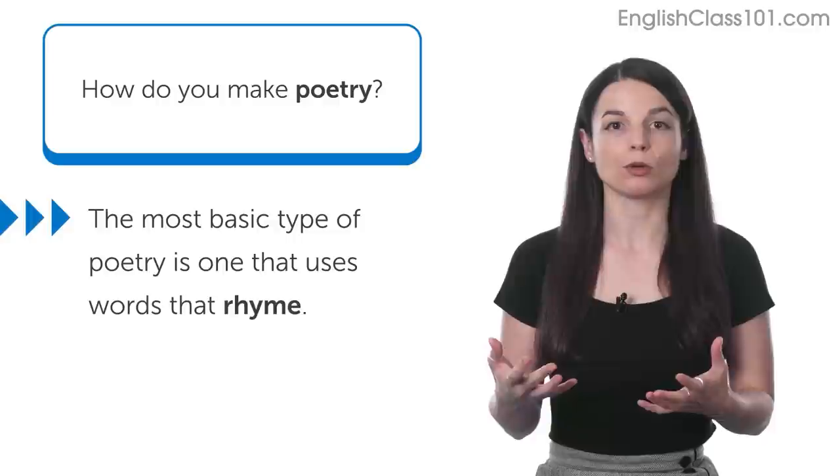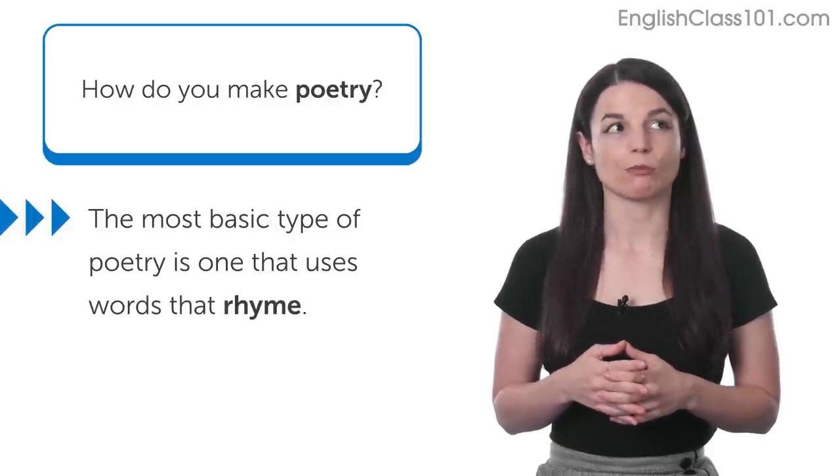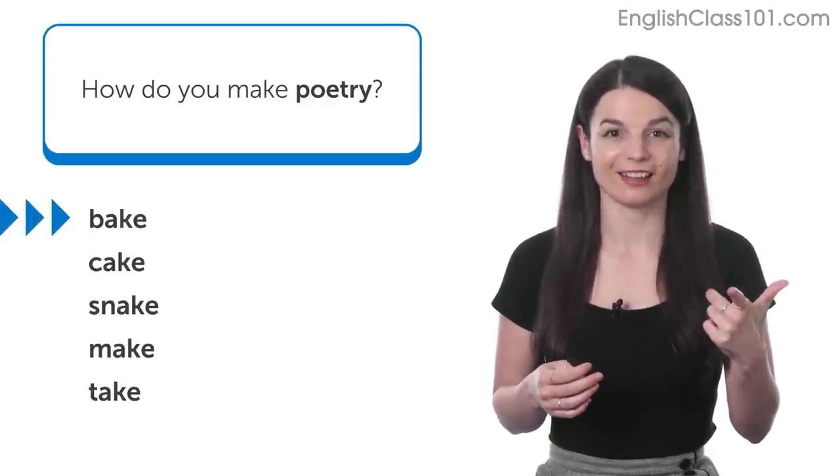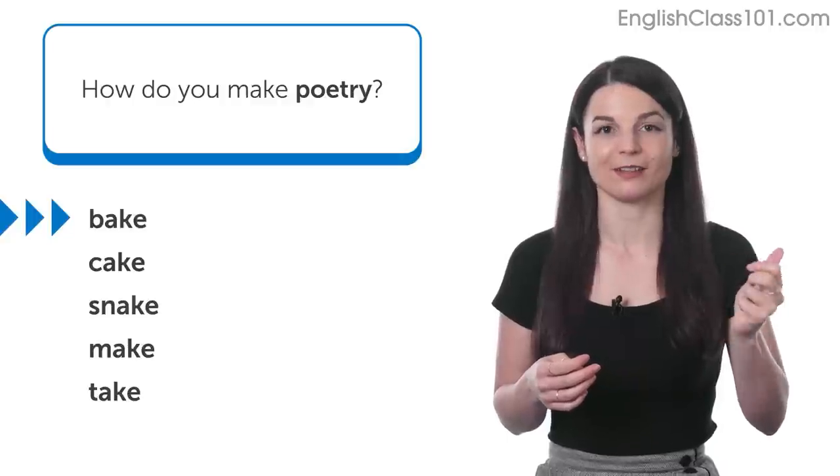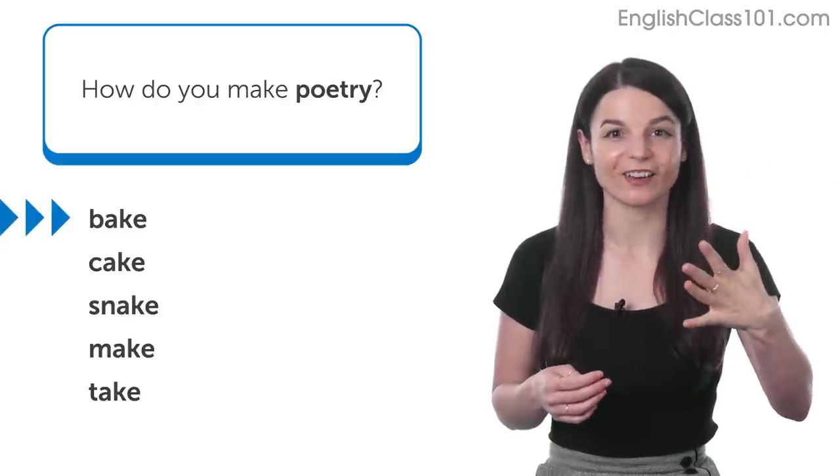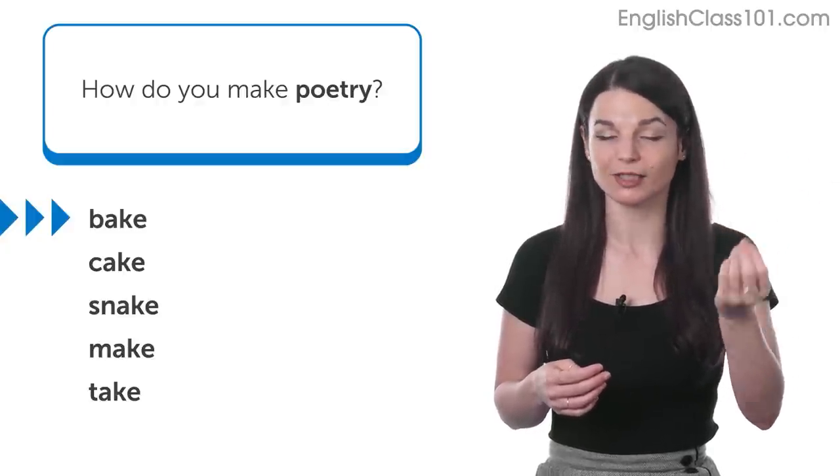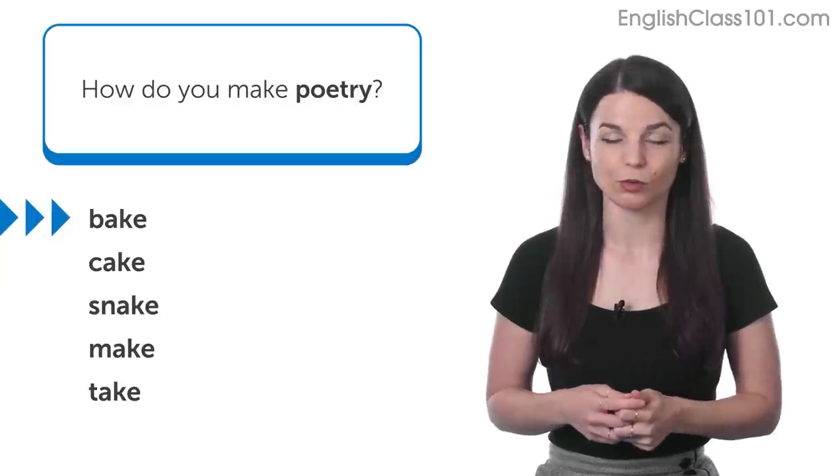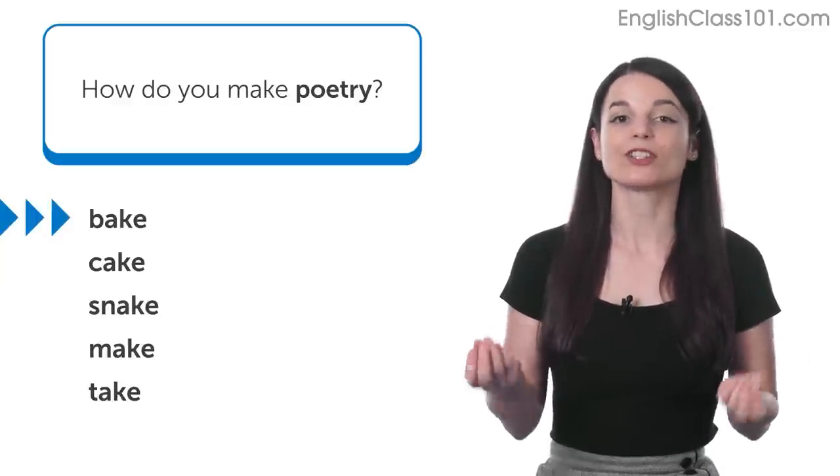So, for example, words that rhyme in English would be, for example, something like bake and cake, right? Or snake and make and take. All of these have the same ending sound, right? The ending syllable has the same sound in all of these words. So, we say these words rhyme.